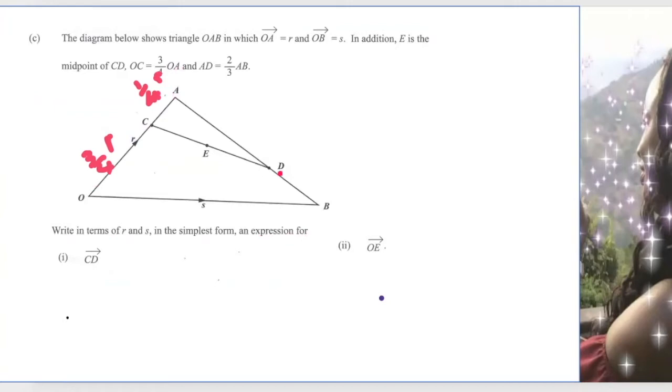To find AB I will use the information where I'm moving from point A to point B. I can go the longer route which is AB equals AO and then OB. So I have AO plus OB. And that will give me AB.